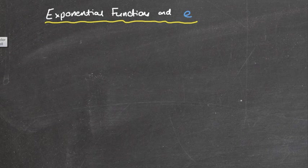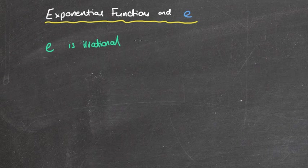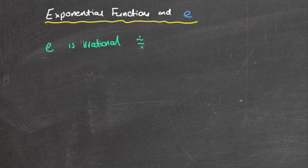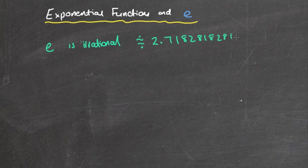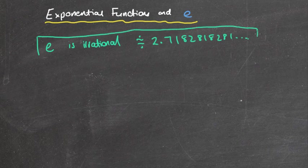First of all, I'm going to start by saying that e is irrational. It is an irrational number like pi, equal to approximately 2.718281828, etc. Now I'm going to say that out of the whole tutorial today, that is all you need to come out with.